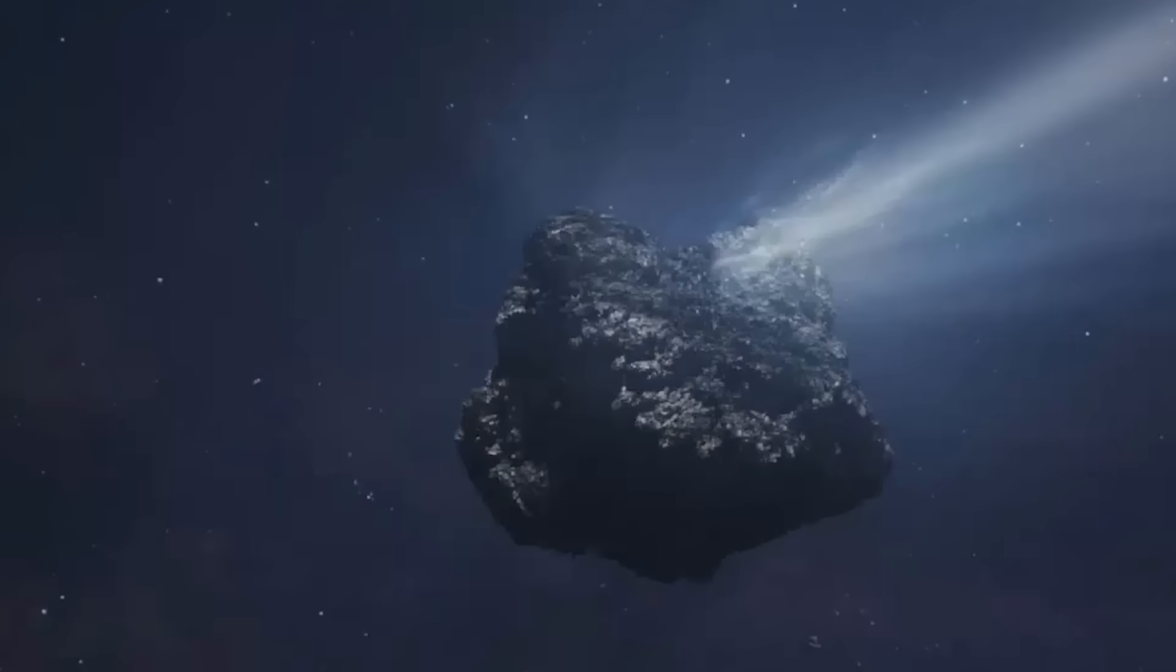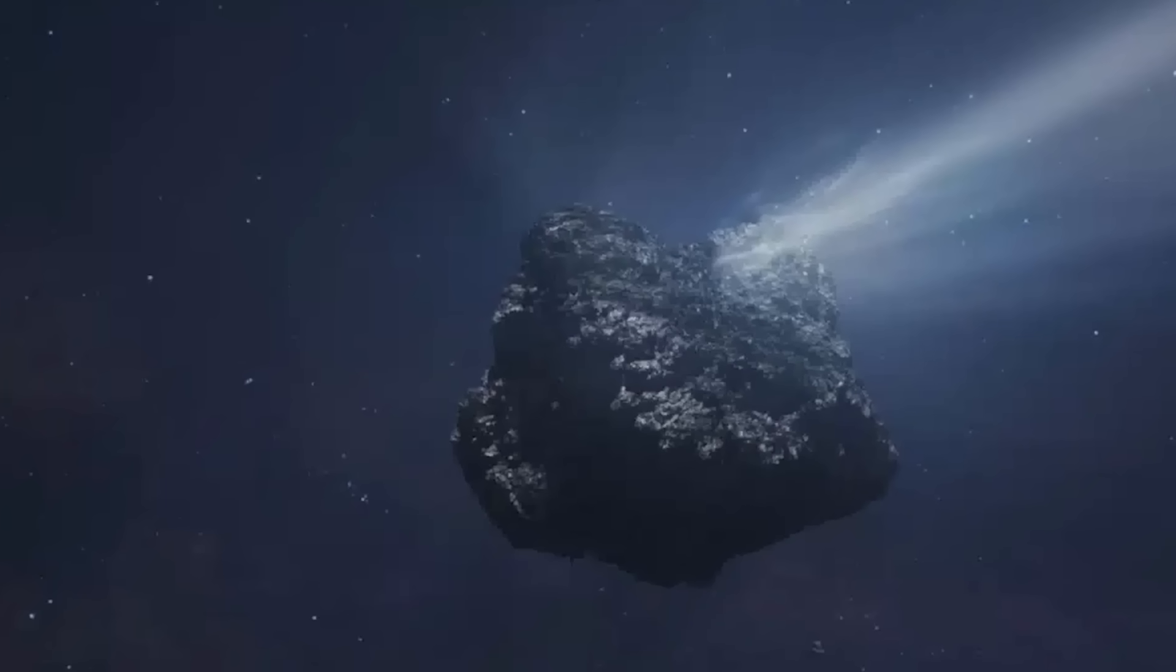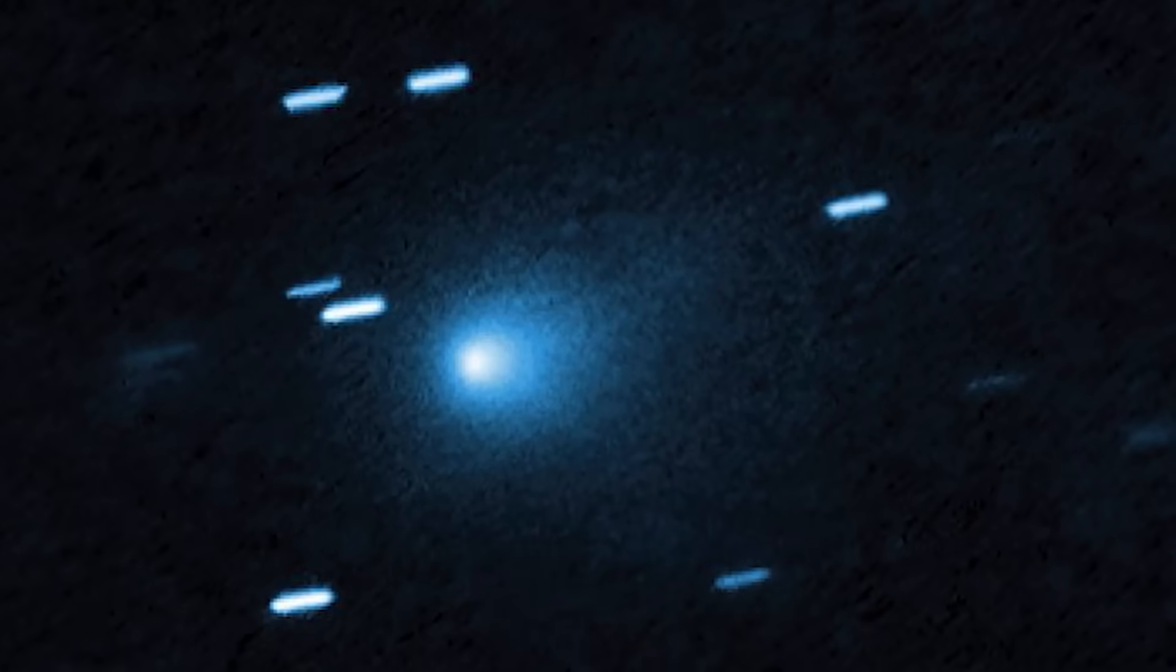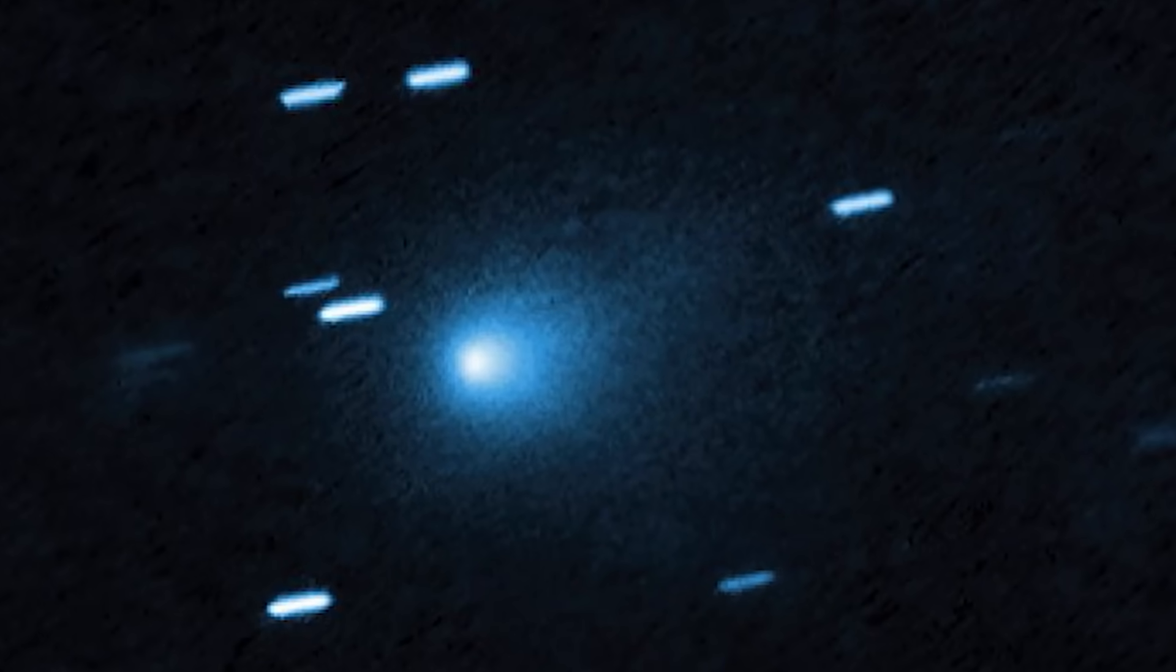The official explanation was that pockets of ice on its surface were turning to gas and firing off like tiny rocket thrusters. A plausible, if convenient, explanation. But here's where the story takes a dark turn. That explanation fell apart when 3i Atlas sent its final terrifying message.